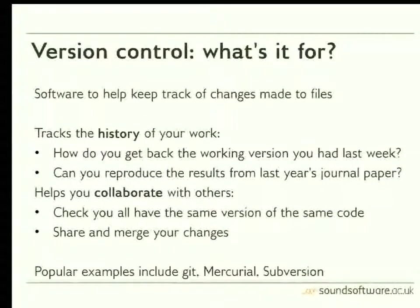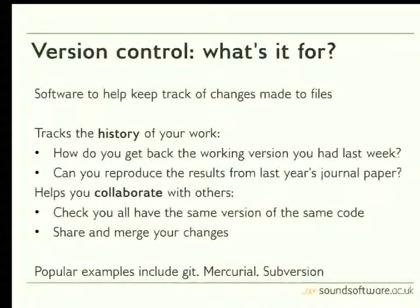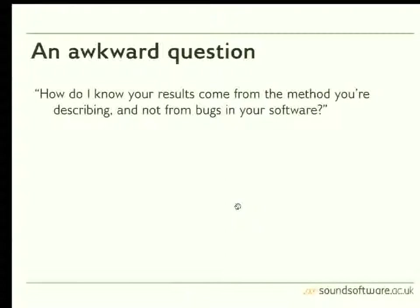Version control software also helps in collaboration. It allows you to be sure that more than one person working on the same codebase all have the same version. It enables you to merge and manage changes that multiple people might make. That facility can be very useful even if you're the only person working on your code, for example if you're using more than one computer. Popular version control software includes Git and Mercurial — we're going to be using Mercurial in this example.